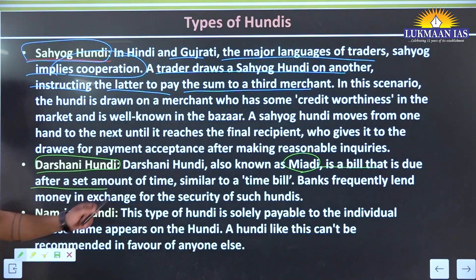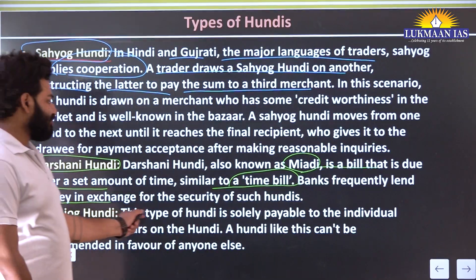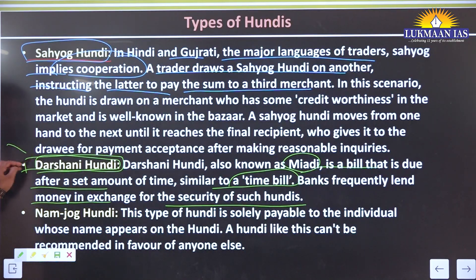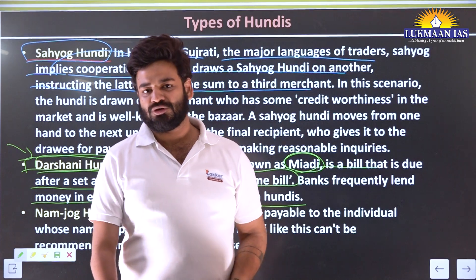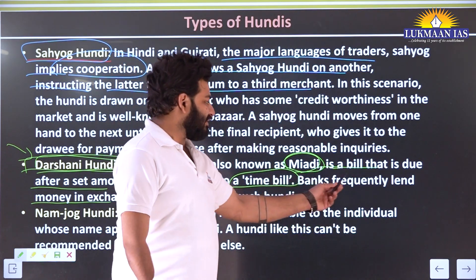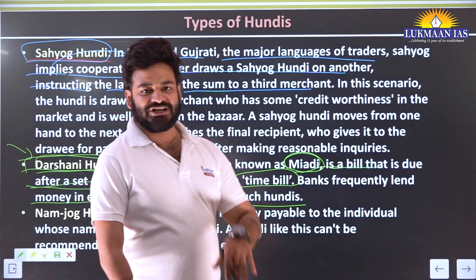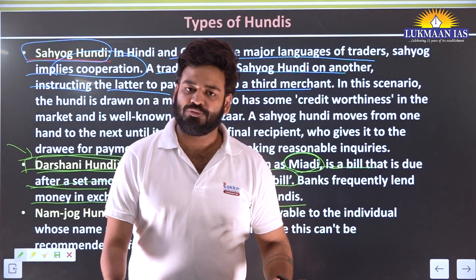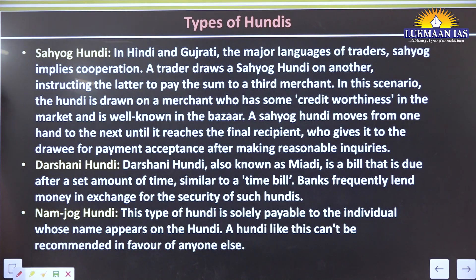Darshani Hundi, also known as Miyadi, is a bill that is due after a set amount of time - similar to a time bill. Banks frequently lend money in exchange for the security of such a Hundi. For example, if payment was finalized for today but could not happen, it can be done in a day or two - a Miyadi or Darshani Hundi would be issued for that extended time.